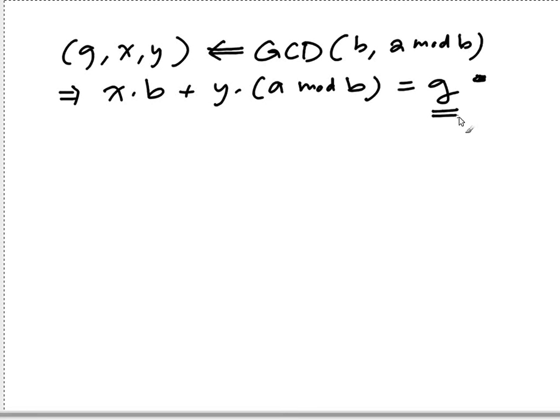So the g part is unchanged. So we need to figure out x prime times a and y prime times b such that they are all equal to g.